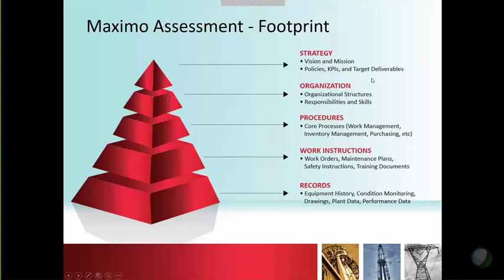You'd want to spend some time going through the organization as well — do you have formalized maintenance planners, schedulers, coordinators, and foremen? How does everything flow? Do you have buyers? Do you have a manned or unmanned warehouse? There's a lot to understand organizationally that helps you understand how Maximo could fit into your environment. And really understanding the vision and mission of the company — is the system fulfilling that vision statement? What policies are in place? What KPIs should you be generating?